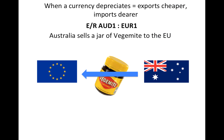Let's look at the case of imports. Suppose that Australia is selling a jar of Vegemite to the European Union and we go back to the original exchange rate of one Australian dollar per euro. If this jar was priced at two dollars, this means that European customers will have to pay exactly two euros.